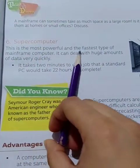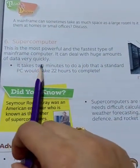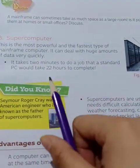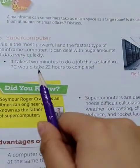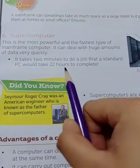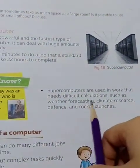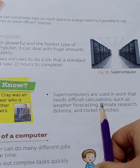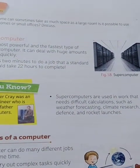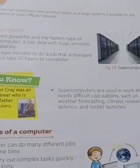A supercomputer is the most powerful and fastest type of computer. It can process huge amounts of data very quickly. A job that takes a standard PC 22 hours to complete, a supercomputer can do in just 2 minutes. Supercomputers are used for difficult calculations such as weather forecasting, climate research, defense, and rocket launches.